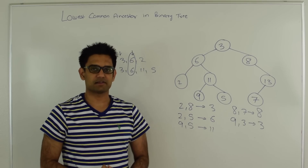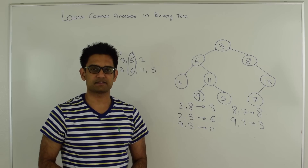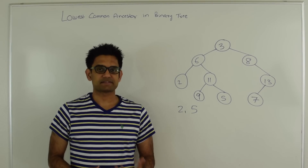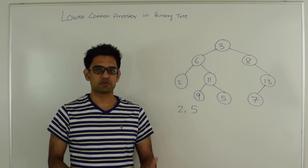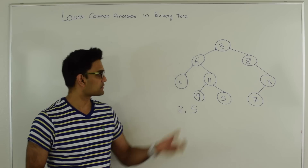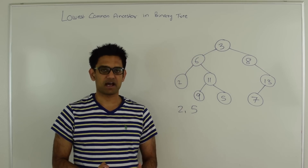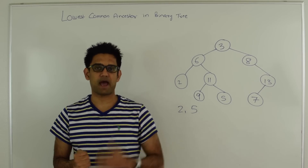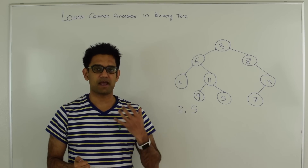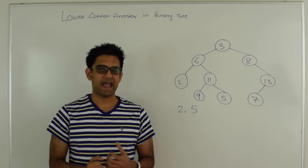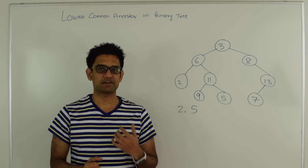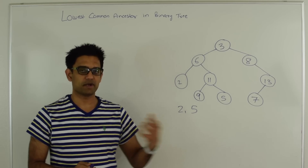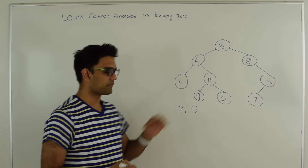Next, we look at an algorithm that finds the lowest common ancestor in linear time without extra space. Starting from the root, we search for either of the two nodes. Any time a node is found, we return it to its parent. Any time a node receives a not-null node from both its left and right sides, it knows it is the lowest common ancestor and returns itself to its parent.